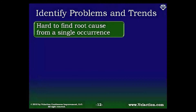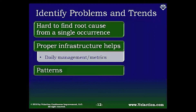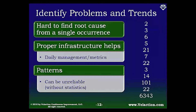When there are few occurrences of a symptom, it can be very difficult to identify the source of the problem — there simply isn't enough information. This problem is somewhat diminished when you have a good infrastructure in place, such as a daily management system or a way to collect data for reporting metrics. One way you will often identify problems is when a pattern emerges, but without sophisticated statistical analysis, patterns can be hard to spot. You may see red herrings — patterns that aren't really there — or miss the pattern altogether. For example, in a series of numbers, every other number being prime might be a challenging pattern to spot.